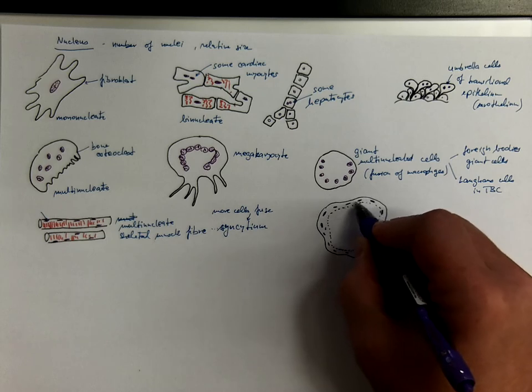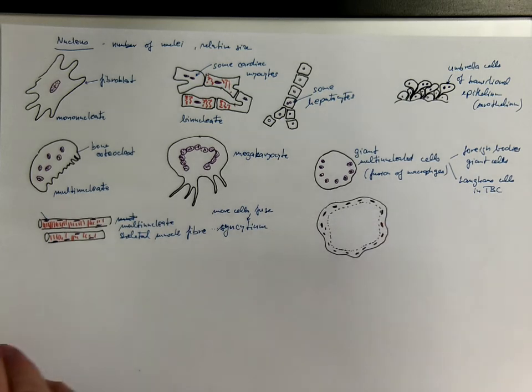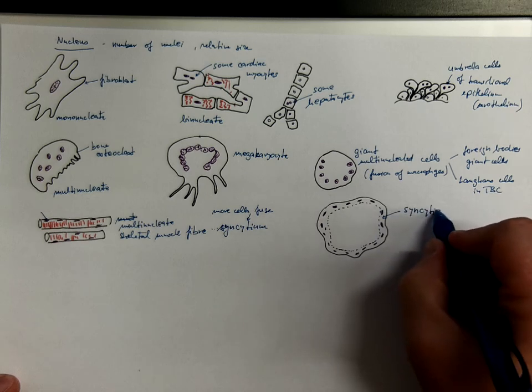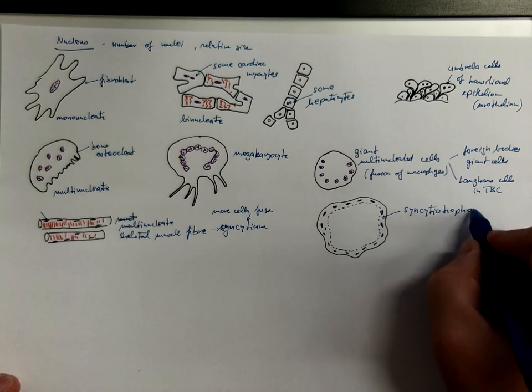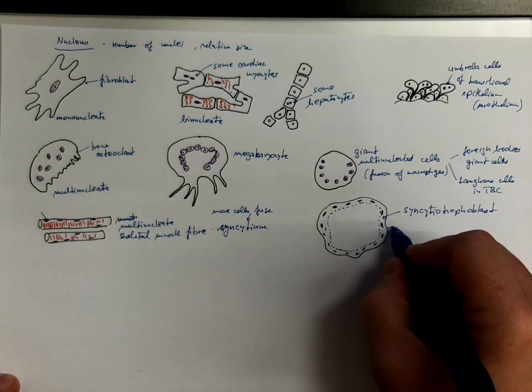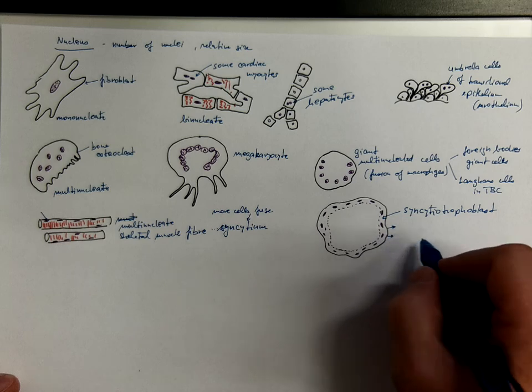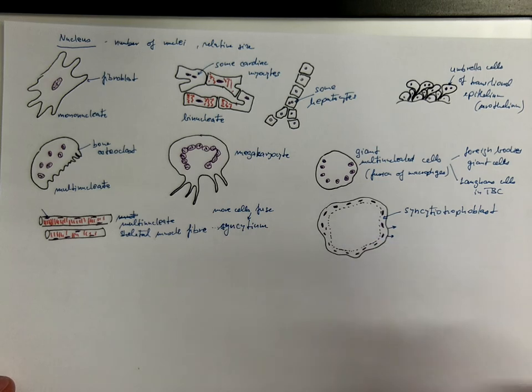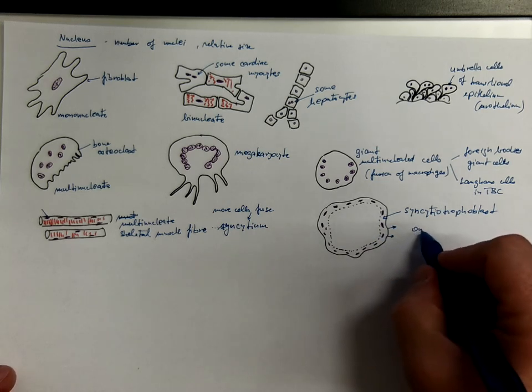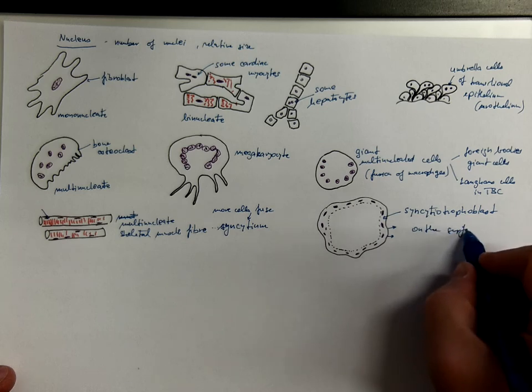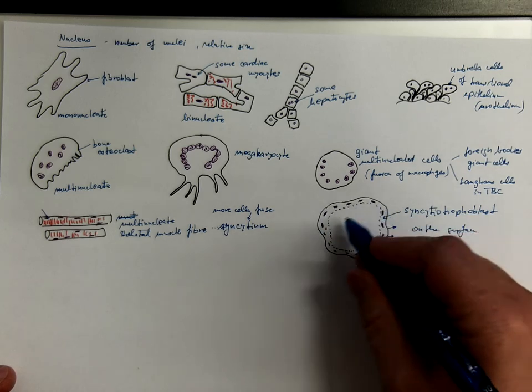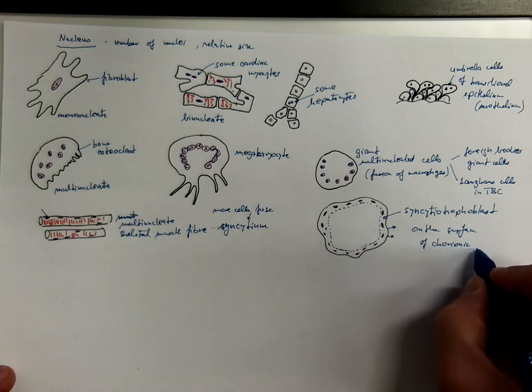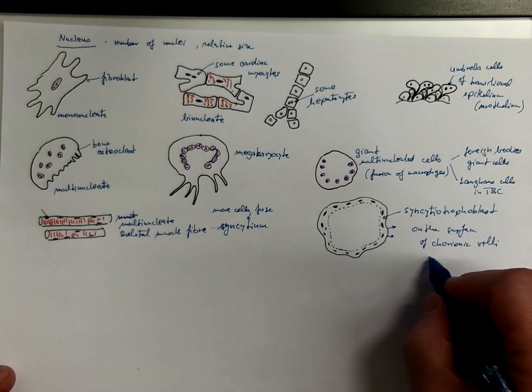So, it's usually dark but more nuclei. We call it syncytiotrophoblast layer. And it's responsible for invading into the wall of the uterus and being part of the barrier between the blood of the mother and blood of the embryo. It's on the surface of these structures, which is one of the many chorionic villi, which are the villi of the placenta.